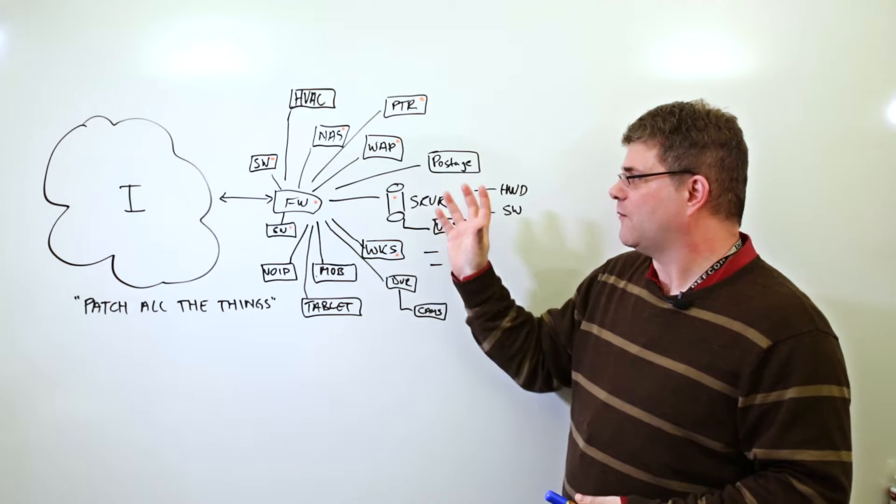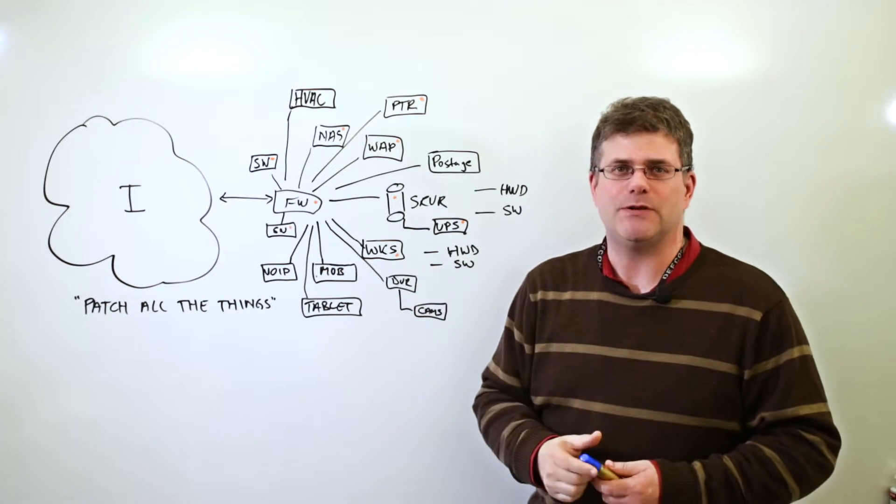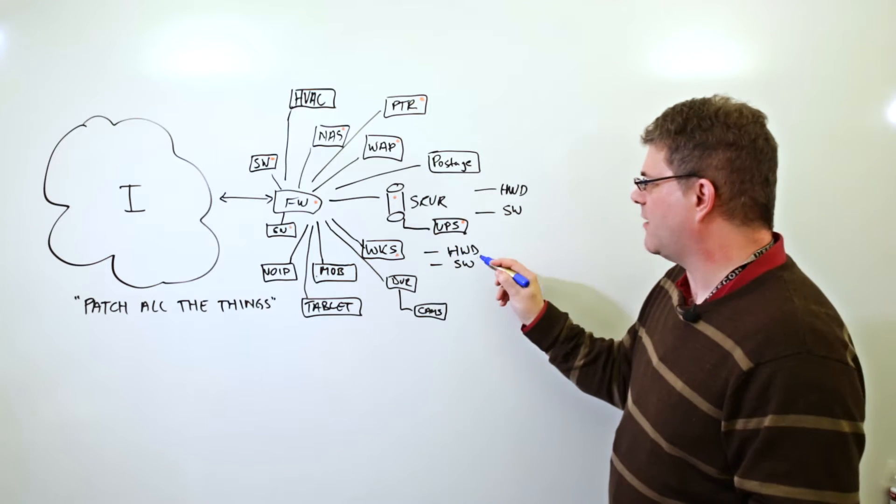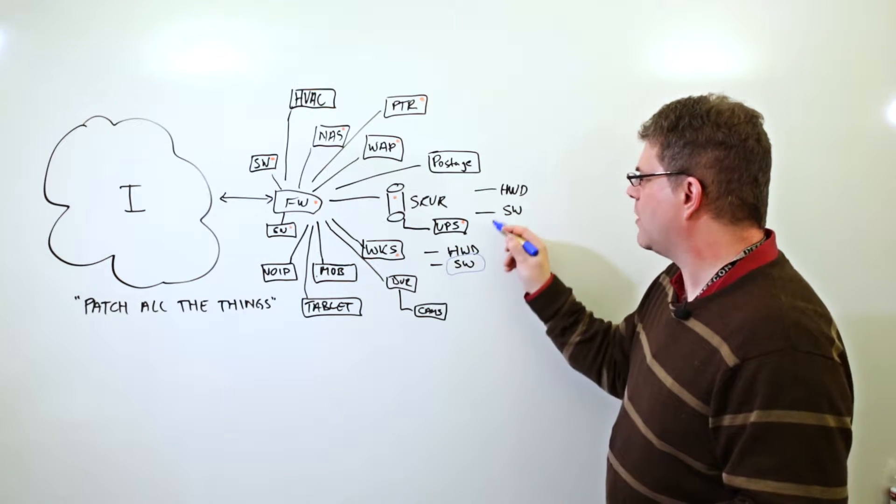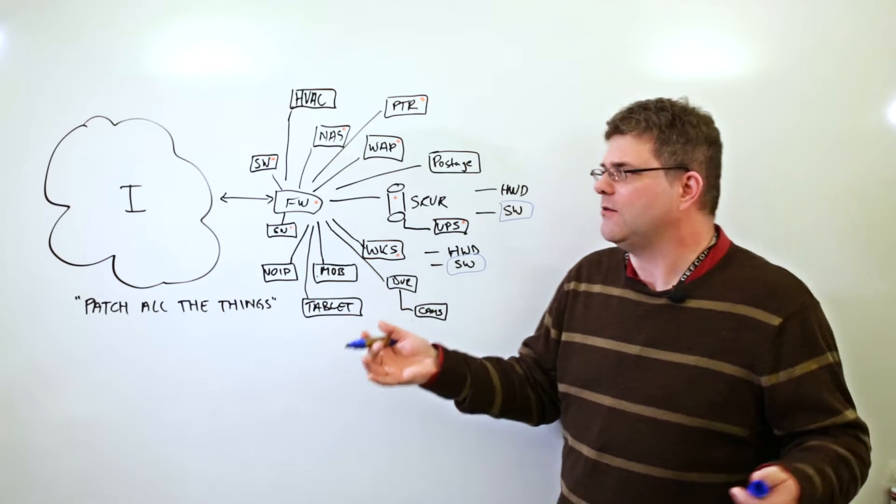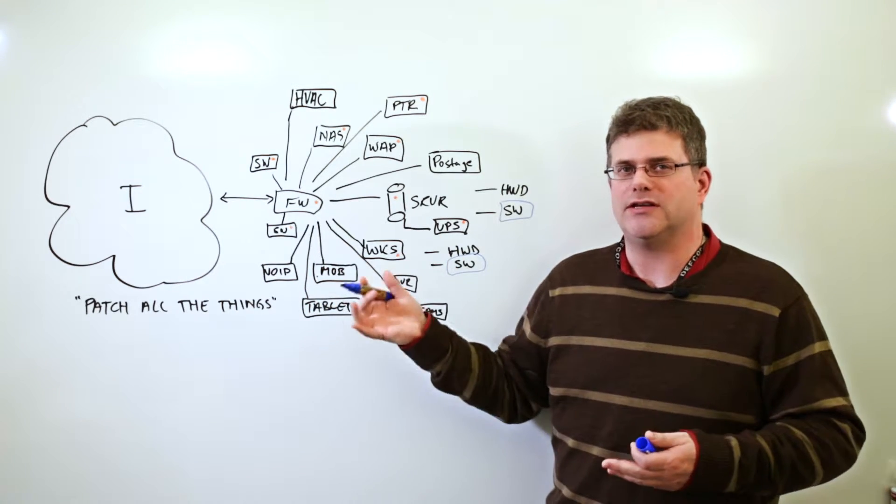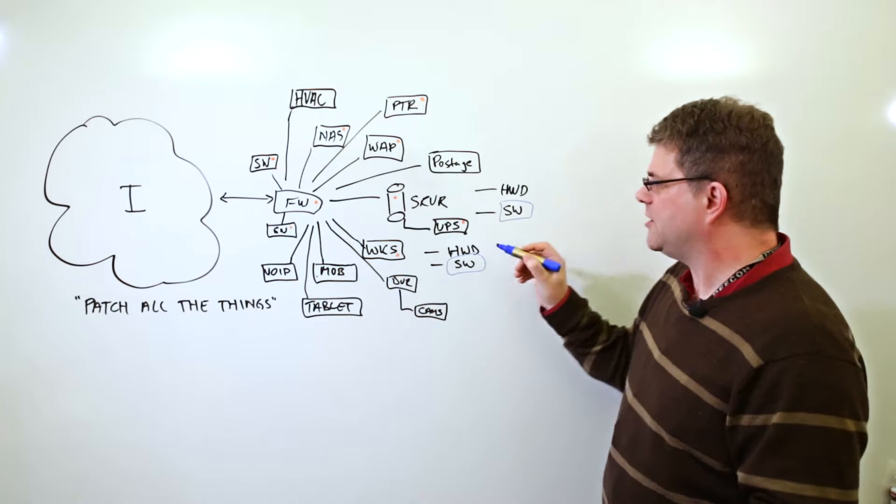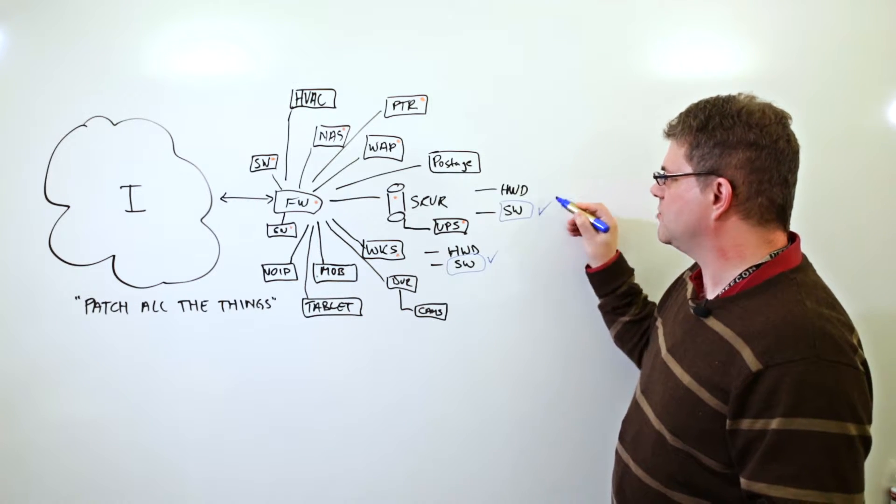So one of the key takeaways from all of this stuff and the last piece to really talk about is the software. The software is probably the number one threat to your organization. Even though we spent a little bit of time talking about the hardware, the huge security wins come from the actual software.